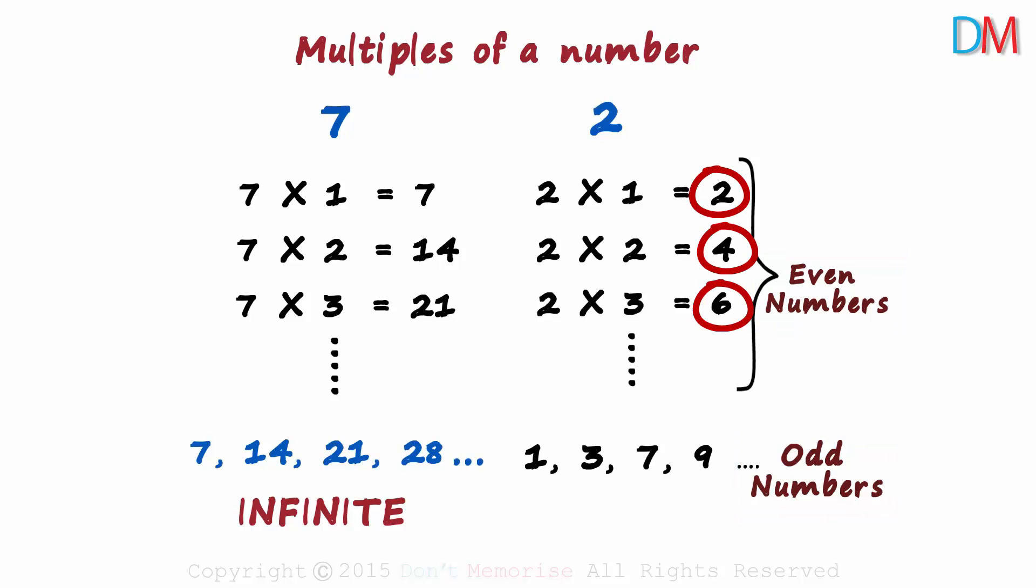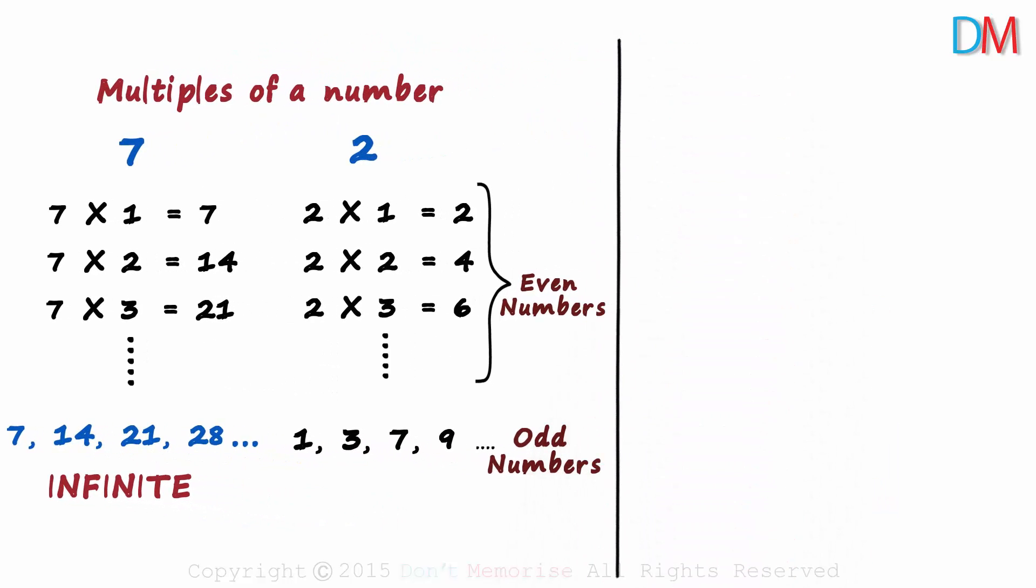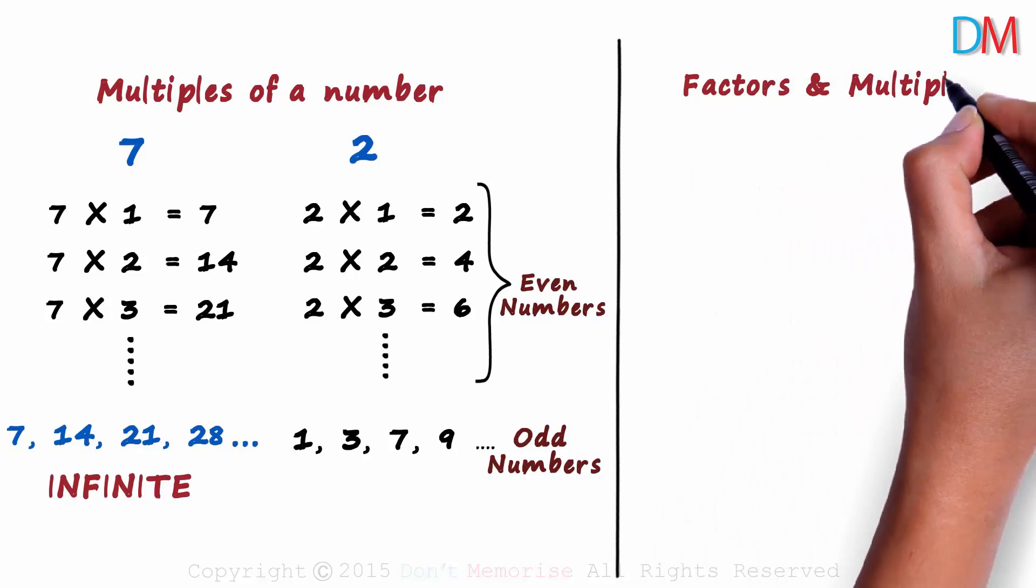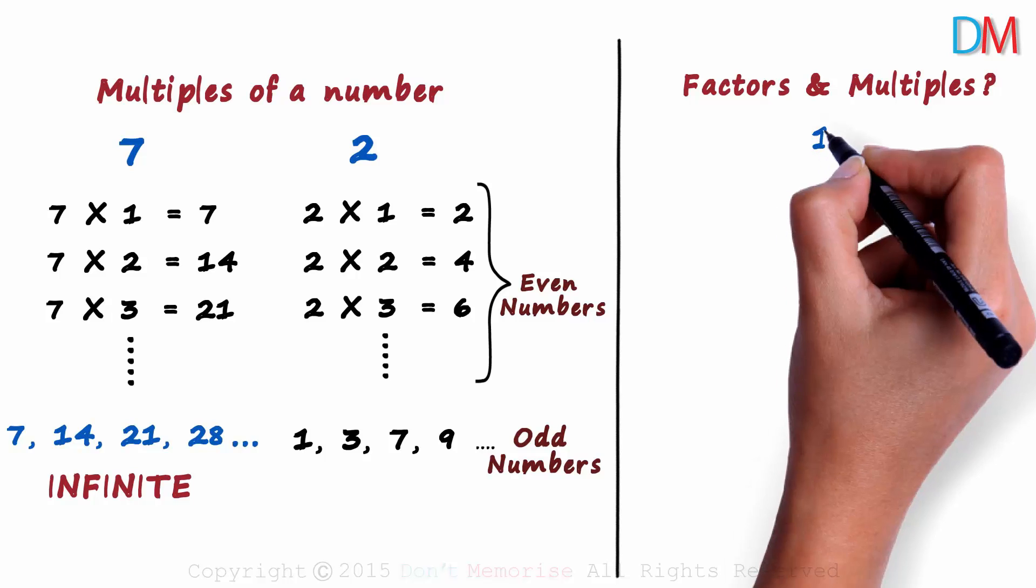Multiples of 2, even. Non-multiples of 2, odd. And now we come to a very interesting question. How are factors and multiples related? Let's understand their relation with the help of a random number. Say 12.